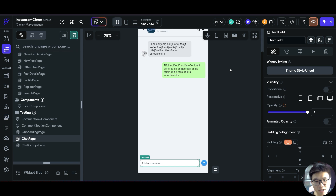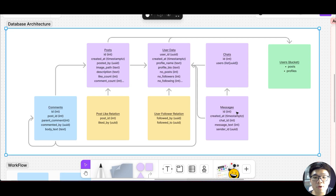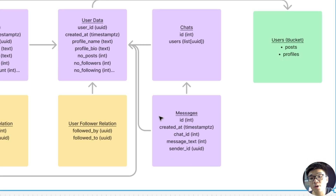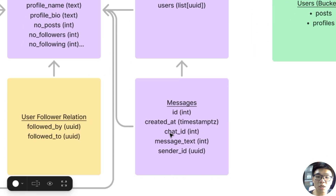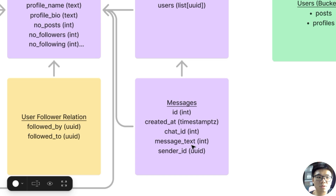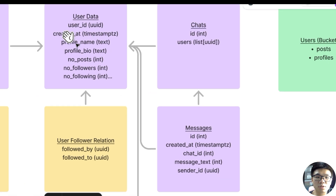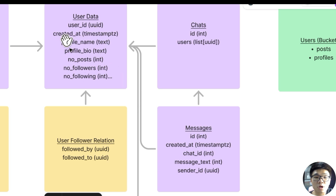Let's review our database architecture once more. We already have our messages table as well as our chats table. The messages table contains a chat ID column which is a foreign key relation to our chats table. This ensures we can get all the messages that belong only to the specific chat group. We also have the message text column and the sender ID column, which is a foreign key relation to our user data table, allowing us to join both tables and access user information such as name or profile picture.